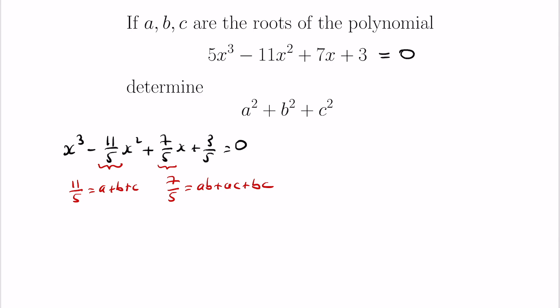So right now it seems like we don't have access to the quantity a squared plus b squared plus c squared. But we can come kind of close. We can square a plus b plus c and have some information there. So in particular 11 fifths squared is equal to the quantity a plus b plus c squared.